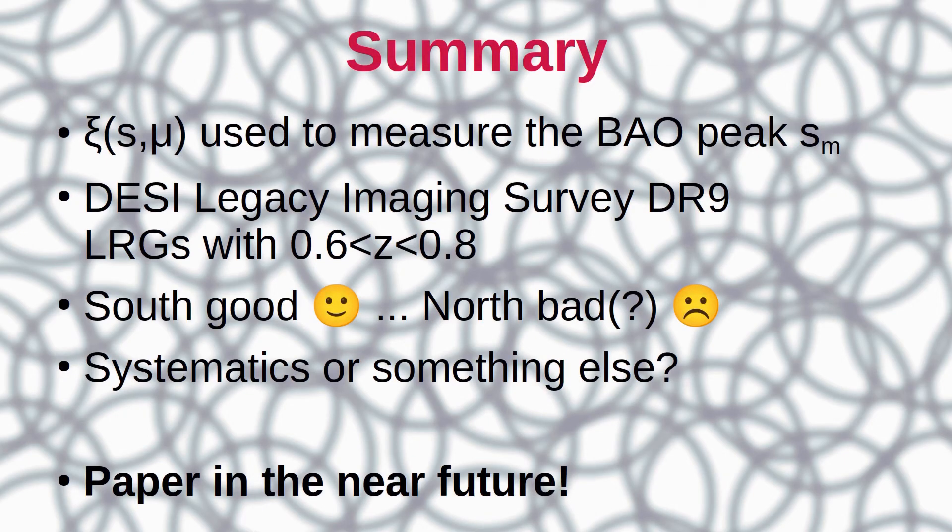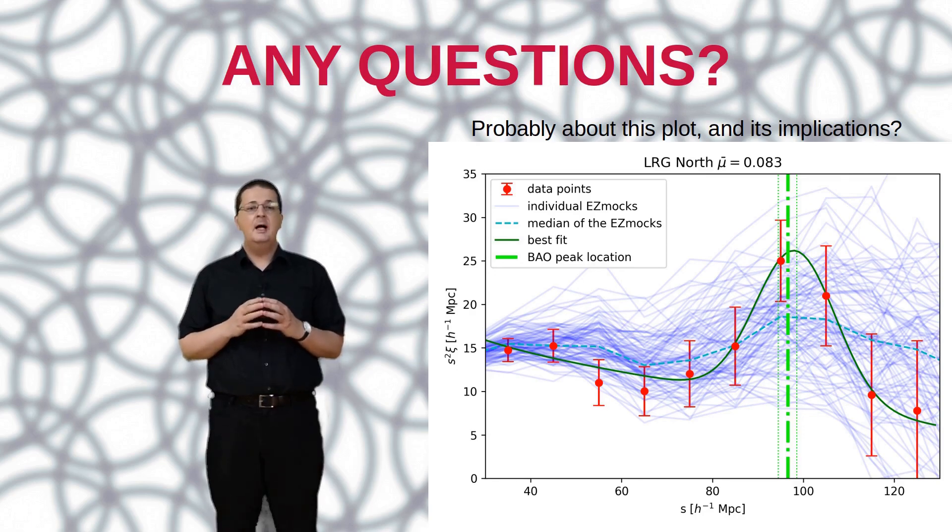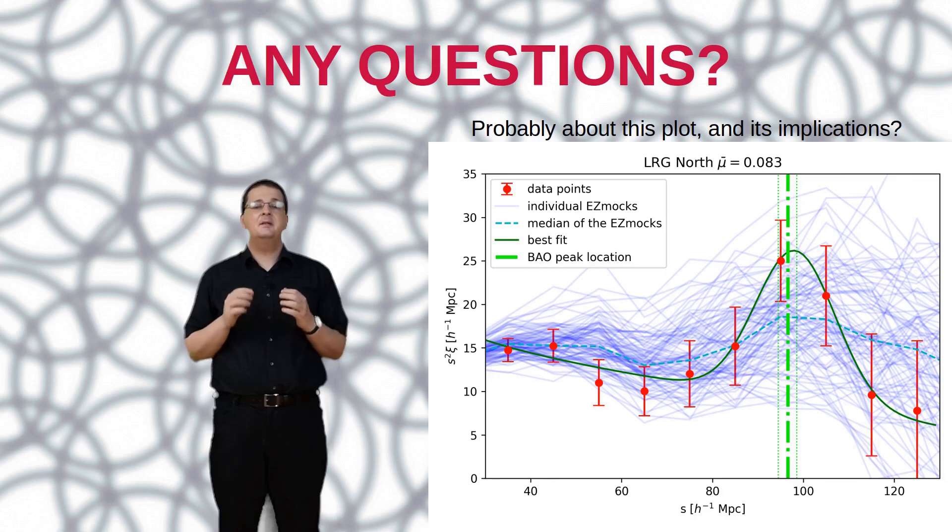In summary, we have shown that the wedge two-point correlation function can be used efficiently to find the BAO peak location. We used data from the DESI Legacy Imaging Survey to measure the BAO peak location of an LRG sample around the redshift of 0.7 in two distinct footprints on the sky. We used our measurements to infer the cosmic distance dA using model templates. While the results for the south agree with previous measurements, our results for the north are still problematic and we are still trying to understand the issues and systematics behind it. And please keep an eye out for our forthcoming paper, which will be hopefully submitted soon and which will contain a clear answer to the remaining issues. Thank you and I am looking forward to answer all your questions either during the live discussions or any time in the dedicated Slack channel.